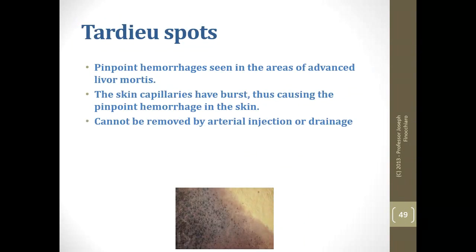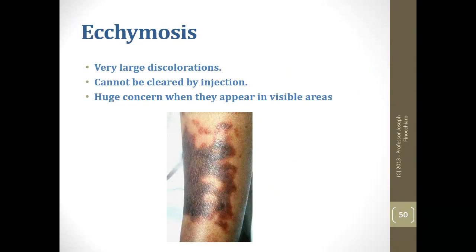Tardieu spots are pinpoint hemorrhages seen in areas of advanced livor mortis. You can have petechiae — little ruptures — basically within livor mortis and also in bruises. Skin capillaries burst from coughing, causing petechiae. They cannot be removed — they are extravascular. Ecchymosis is an extravascular bruise that also cannot be cleared, meaning you'll be using opaque cosmetic — essentially clown makeup to cover it.